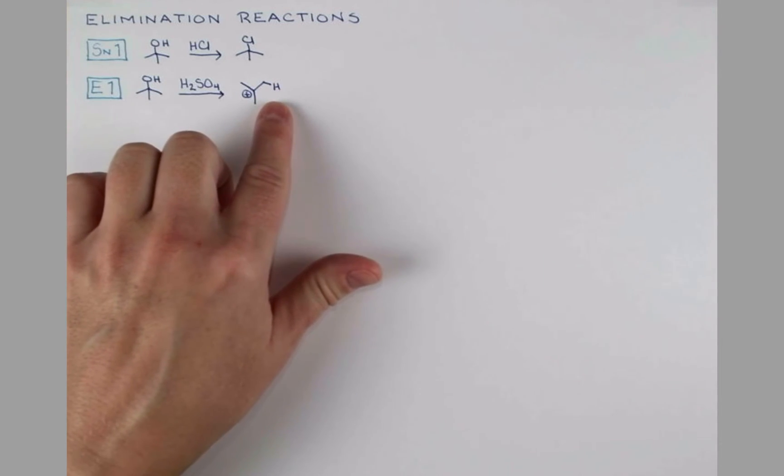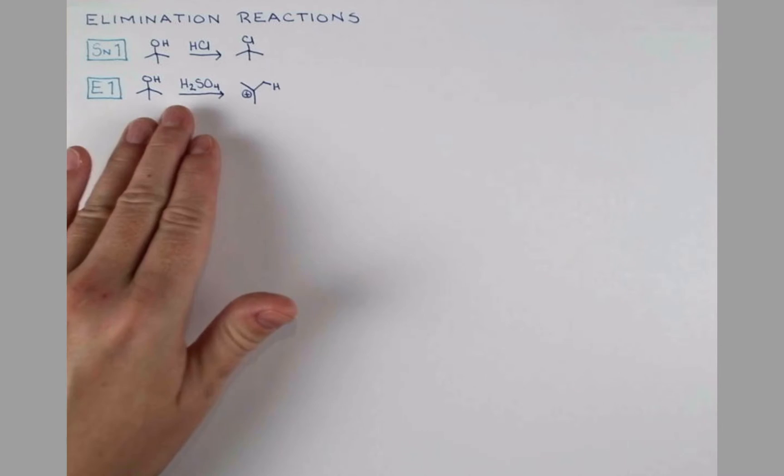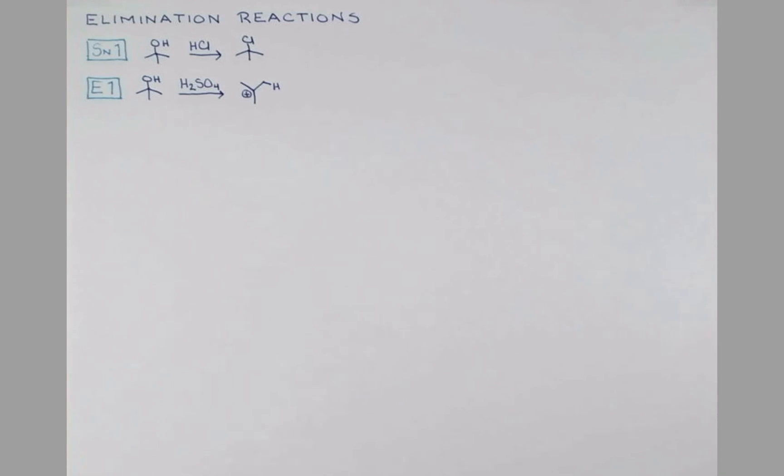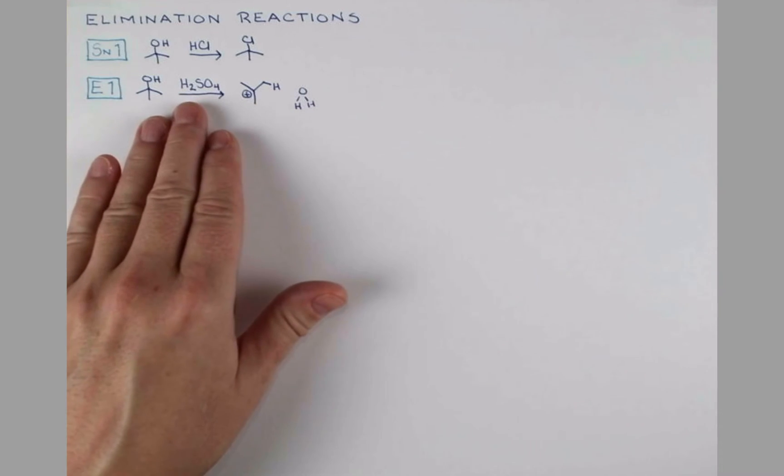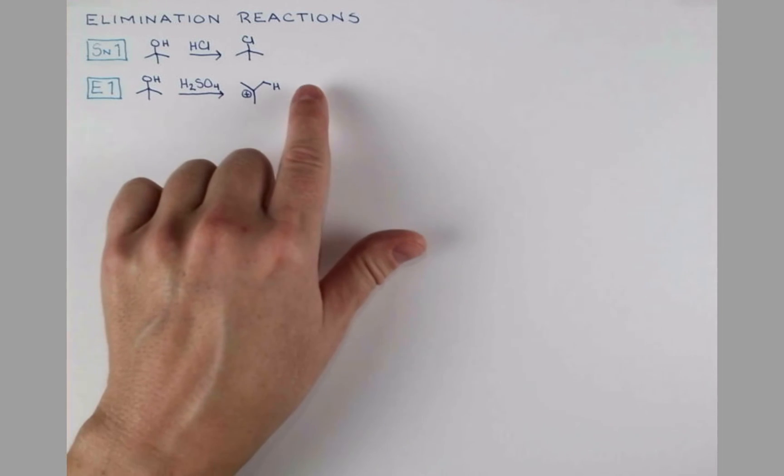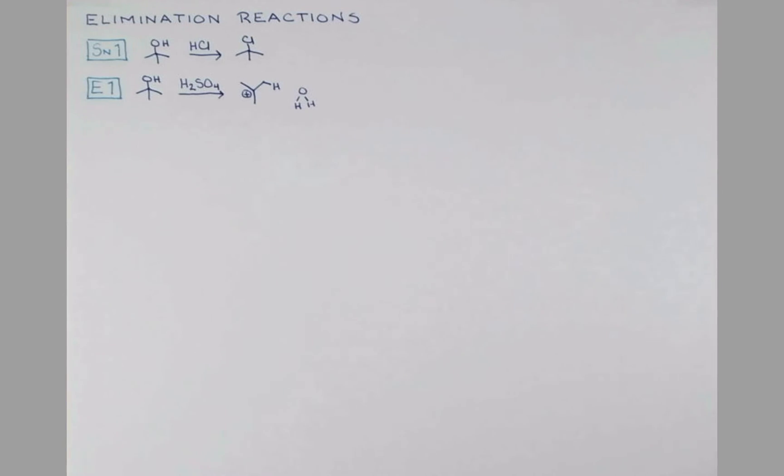Instead, something in the solution is going to deprotonate one of the hydrogen atoms adjacent to the carbocation. So here's one of these hydrogen atoms drawn out. Sulfuric acid, even when concentrated, contains a bit of water. So I'm going to draw that out. Water is more basic than the conjugate base of sulfuric acid. And so we'll show this doing a deprotonation to form an alkene. And the product we'll get looks like this.